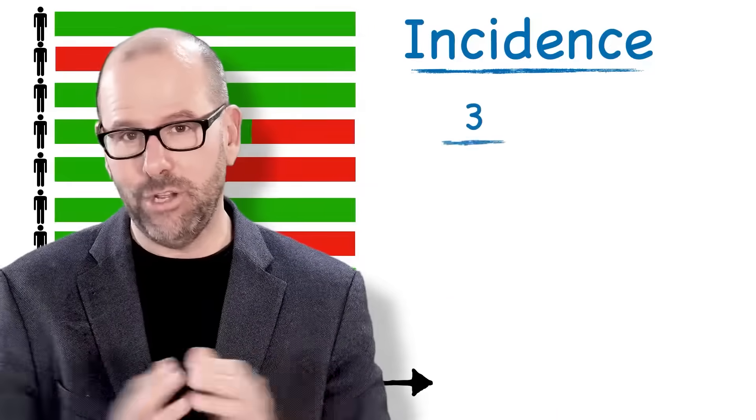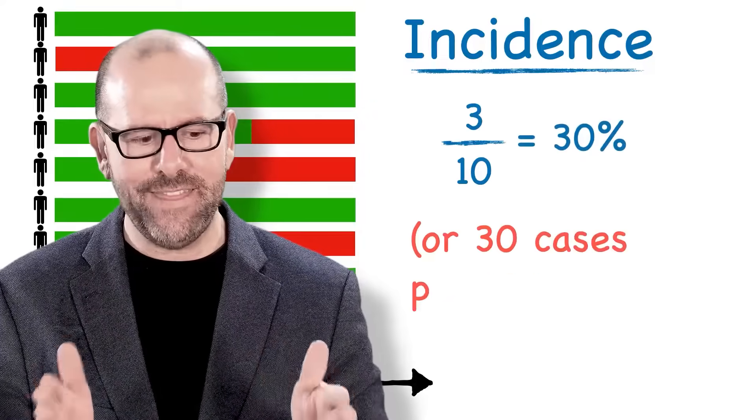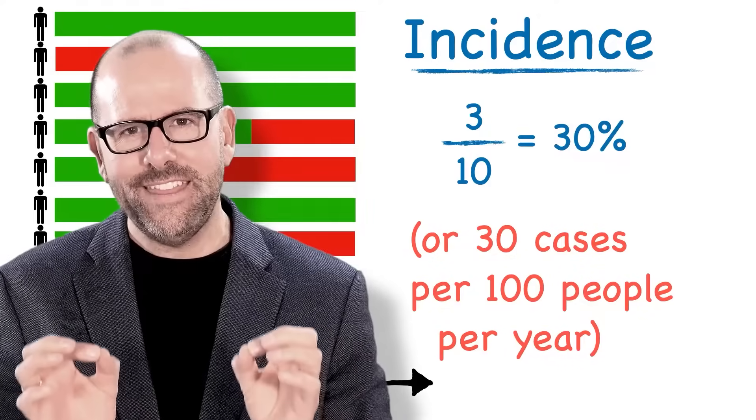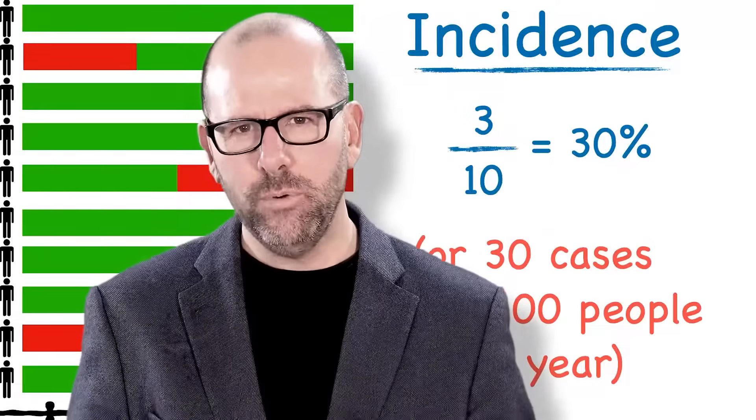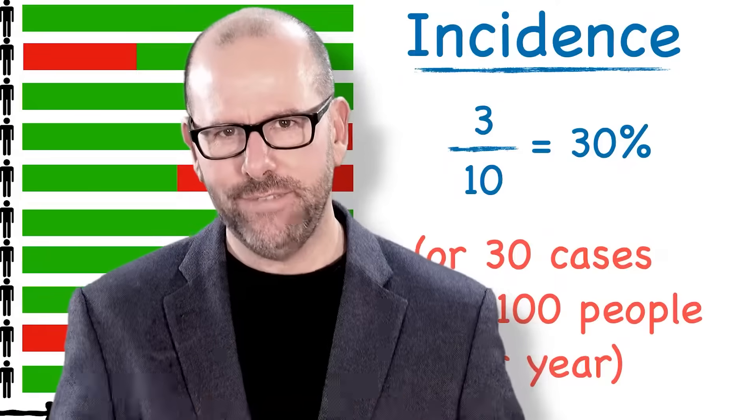Let's say, for example, three of them got cancer in that one year. We would say the incidence is three over 10, so 30%. Now importantly, we're only counting new cases of cancer.